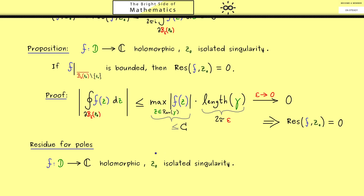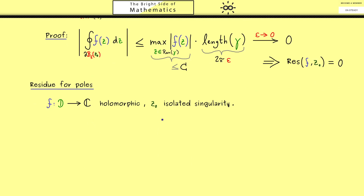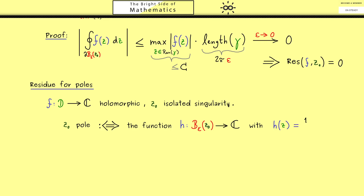As discussed in part 16, an isolated singularity can be a pole for the function f. Having a pole at z0 means we can define a holomorphic function h on the epsilon disk, where h is the reciprocal of f — the inverse value of f — extended by 0 at z0. We claim: first, epsilon can be chosen small enough so that h is well defined; and second, the resulting function is holomorphic. In other words, a pole is simply the inverse of a zero.